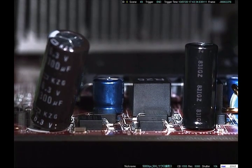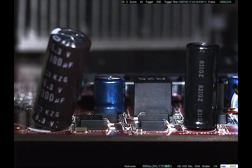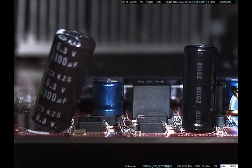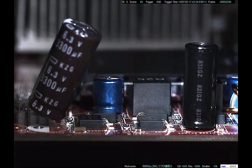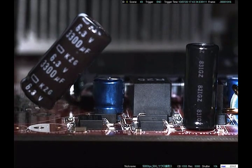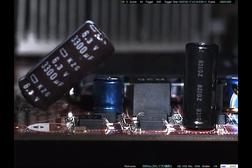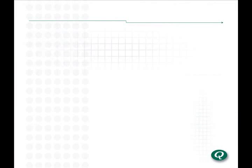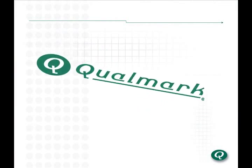By using HALT and HASS with repetitive shock vibration to find these weaknesses and take corrective action, your final product will be more robust and more reliable, resulting in lower warranty costs and delighted customers. Learn how Qualmark can put the power of repetitive shock vibration to work for you.